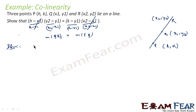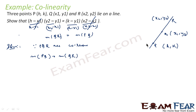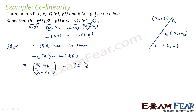Since P, Q, R are collinear, we can say that slope of PQ equals slope of QR. Slope of PQ is K minus Y1 over H minus X1. Similarly, slope of QR is Y2 minus Y1 over X2 minus X1.